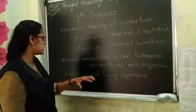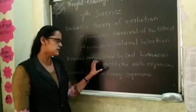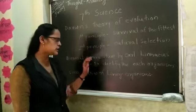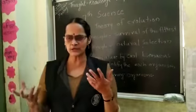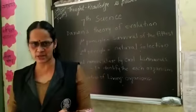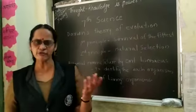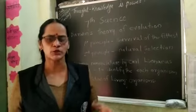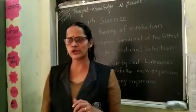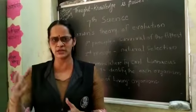Carl Linnaeus also is a scientist, and he had given so much information to us. Binomial nomenclature means, for example, in a class, many students have the same name. Suppose Kiran. There are four students with the name Kiran. So when the teacher says Kiran, how do we understand who he's talking about?